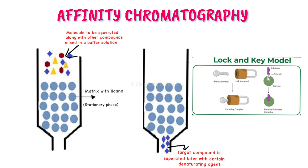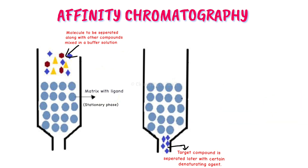The bond formed in affinity chromatography is reversible. In the stationary phase, the target substance binds reversibly. We can add denaturing agents to another medium to release and easily collect the target molecules. This makes it a great purification technique — this is affinity chromatography.